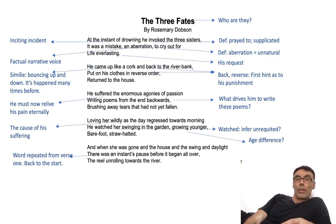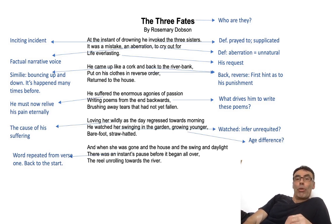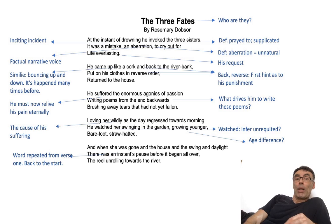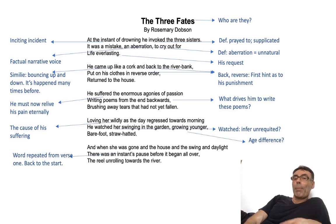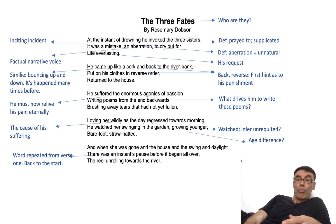Verse three tells us he suffered the enormous agonies of passion. He's living his life backwards, so he feels the pain before we know the cause. Whatever drove him to write poetry — or rather in this case, unwrite poetry — is as yet unknown to us. Similarly, the action of brushing away tears seems to cause them to fall and brings on his sadness. By granting his wish for life everlasting, the fates have ironically punished him — they've condemned him to relive his agonies in perpetuity.